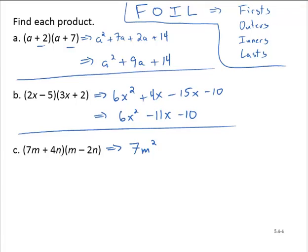Outers, 7m times negative 2n is -14mn. Inners, 4n times m is 4nm. Rearranging the n and the m gives a plus 4mn.